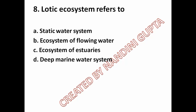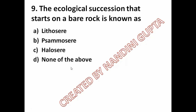Lentic ecosystem means a static water system, while lotic ecosystem refers to the ecosystem of flowing water. Option B, ecosystem of flowing water, is the correct answer for lotic ecosystem.